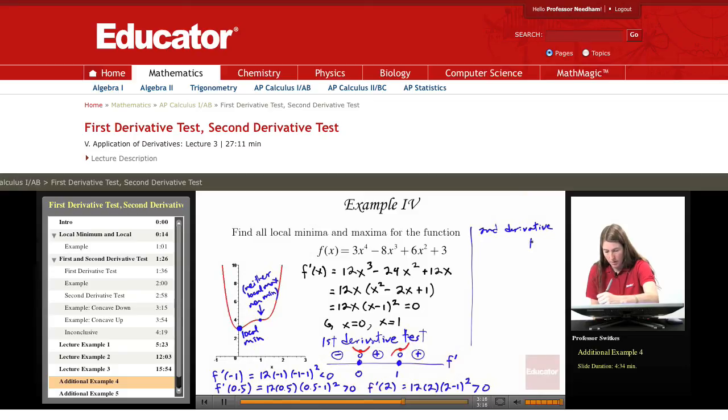So using the second derivative test, we need f double prime of x. And we get 36x squared minus 48x plus 12. And let me factor out a 12, and I'll have 12 times 3x squared minus 4x plus 1. And I need to evaluate f double prime of 0 and f double prime of 1.